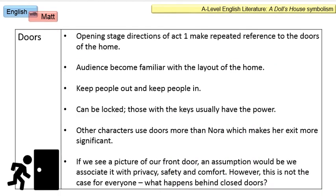The first symbol or motif I want to talk about is doors. If you read the opening of Act 1 in the stage directions, there is repeated reference to doors. As this is effectively the curtain going up, the reader needs to be told what the home looks like. It helps us understand the layout of the home and how this room, where the play takes place, is at the heart of the home with other rooms going off it, such as the hall, the study and so on.